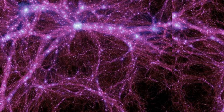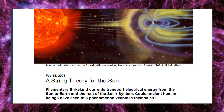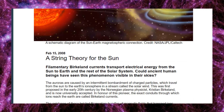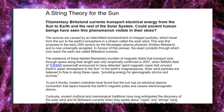Let's read the theory. A string theory for the Sun: filamentary Birkeland currents transport electrical energy from the Sun to Earth and the rest of the solar system. Could ancient human beings have seen this phenomena visible in their skies? The auroras are caused by an intermittent bombardment of charged particles which travel from the Sun to the Earth's ionosphere in a stream called the solar wind. This was first proposed in the early 20th century by the Norwegian plasma physicist Christian Birkeland and is now universally accepted. In honor of this pioneer, the exact conduits through which ions reach the Earth are called Birkeland currents.